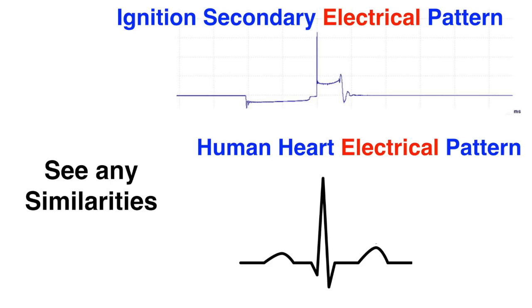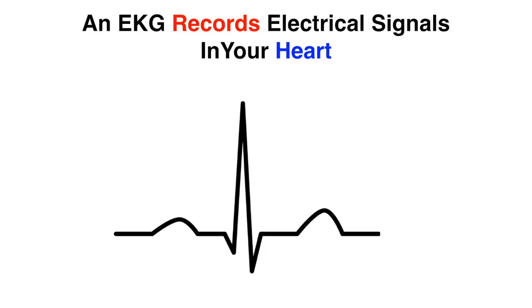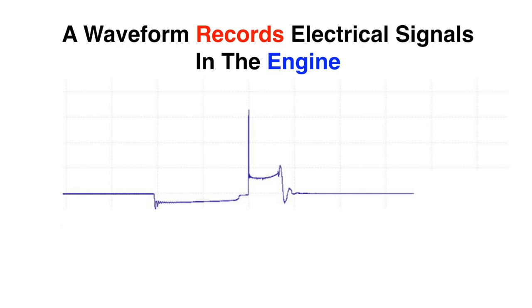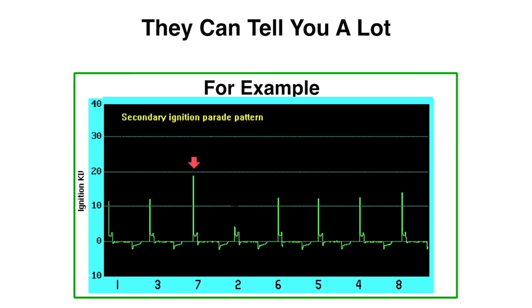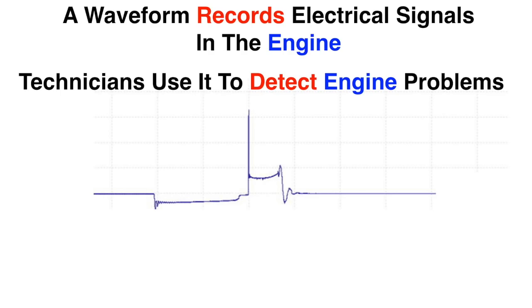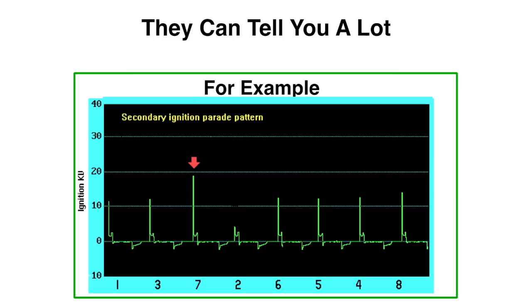An EKG records electrical signals in your heart and doctors use it to detect heart problems. A waveform records electrical signals in the engine and technicians use it to detect engine problems — and they can tell you a lot. For example, if you look at the red arrow, that means there is a lean cylinder which causes hydrocarbons to rise because of a misfire. That's how you would interpret that.